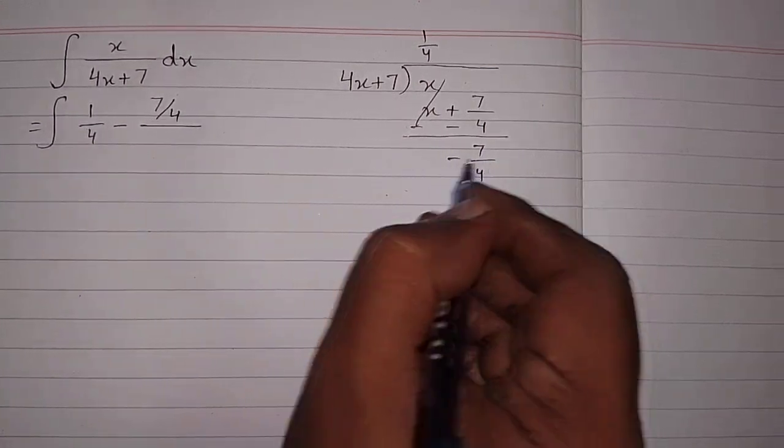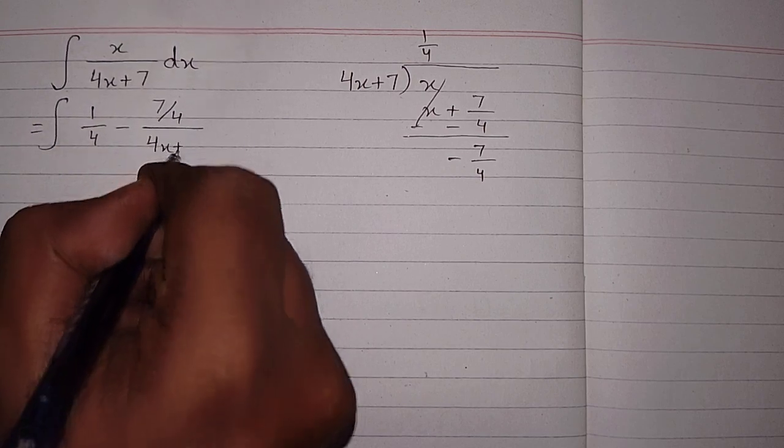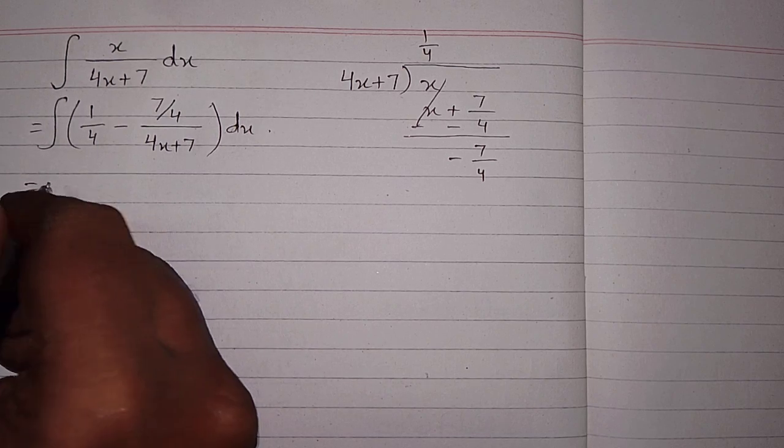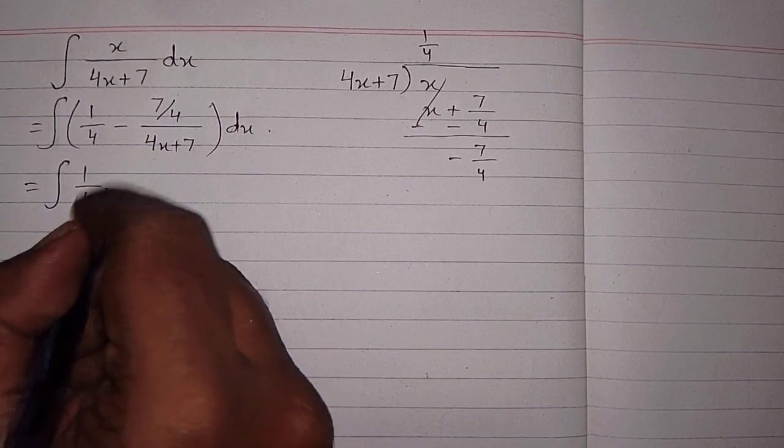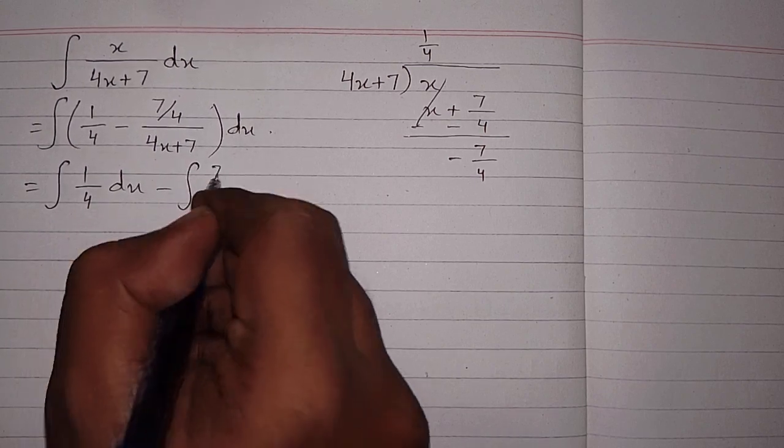Now we will apply integral on both the terms, so we have integral of 1 upon 4 dx minus integral of 7 upon 4 upon 4x plus 7 dx.